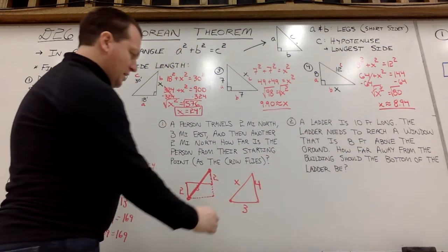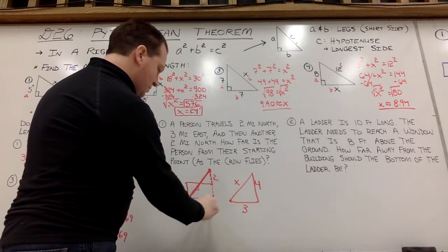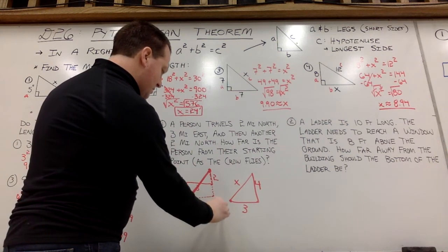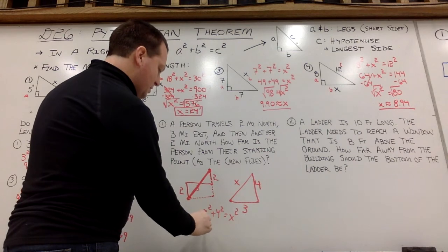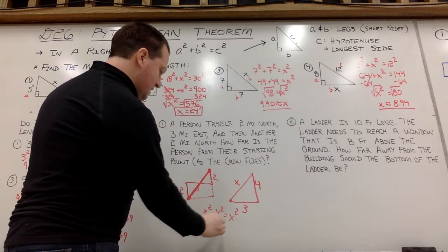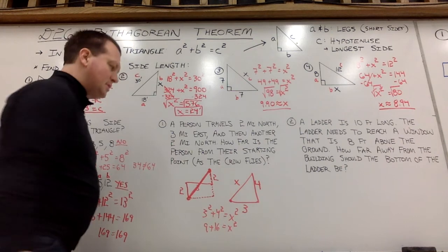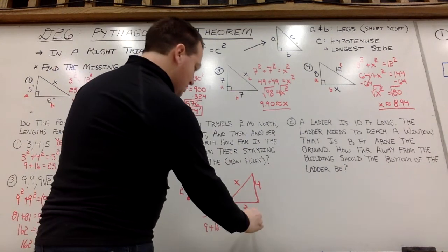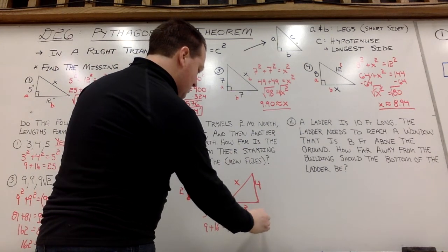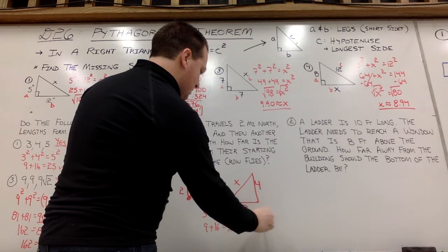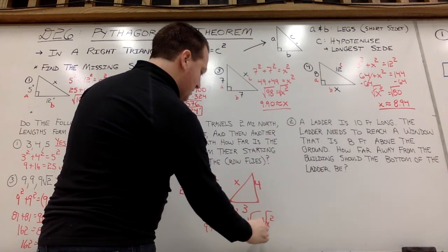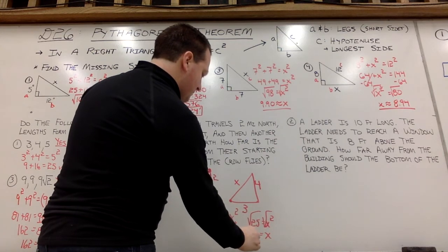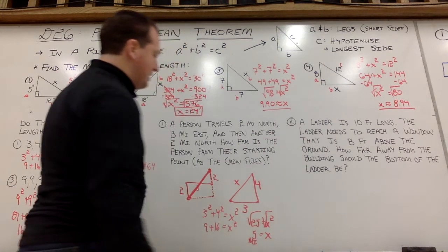So my equation will be a squared plus b squared, 3 squared plus 4 squared will equal x squared. 3 squared is 9, 4 squared is 16, that'll equal x squared. 9 and 16 is 25, and then when I square root both sides, 5 miles will be that straight line distance.